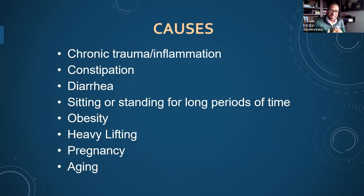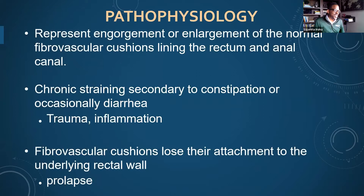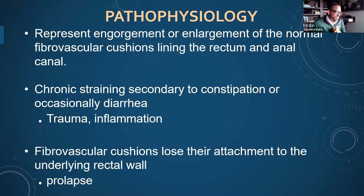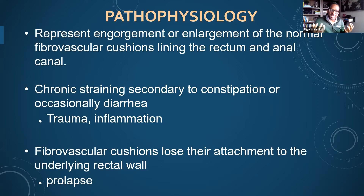Hemorrhoids can form by the swelling of the blood vessels that exist at the bottom of the rectal area. We all have these hemorrhoidal veins — every human being has this plexus of blood vessels — and we call it hemorrhoids when these blood vessels get swollen and dilated. Chronic straining from constipation and diarrhea can cause trauma, inflammation, and swelling. These cushions of blood vessels can sometimes detach from the rectal wall and actually prolapse downward, moving outwards towards the anal area.